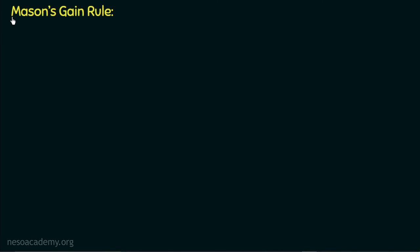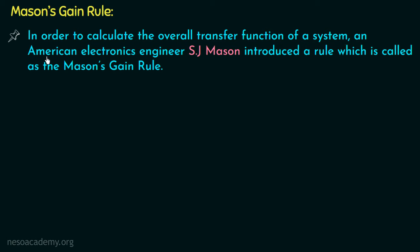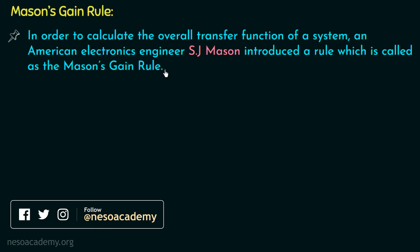We will first see some important points of Mason's gain rule. In order to calculate the overall transfer function of a system, an American electronics engineer S.J. Mason introduced a rule called Mason's gain rule. This rule is used to calculate the overall transfer function of a control system.